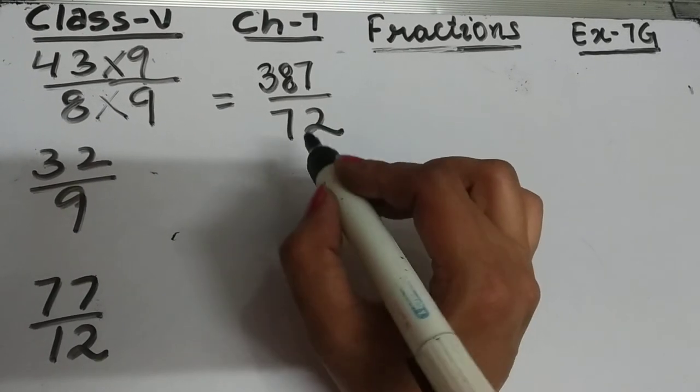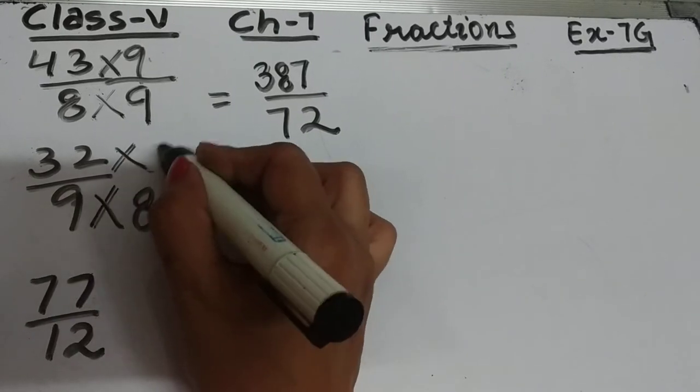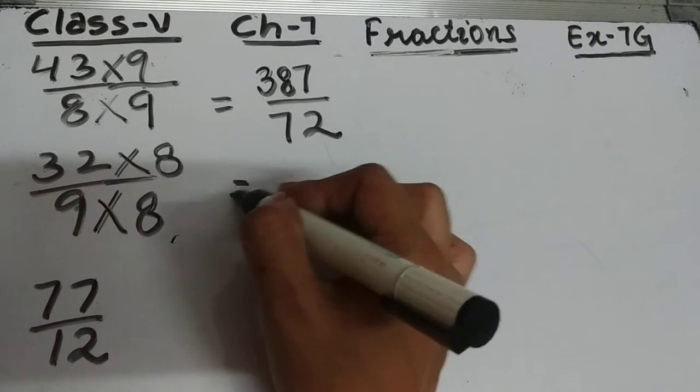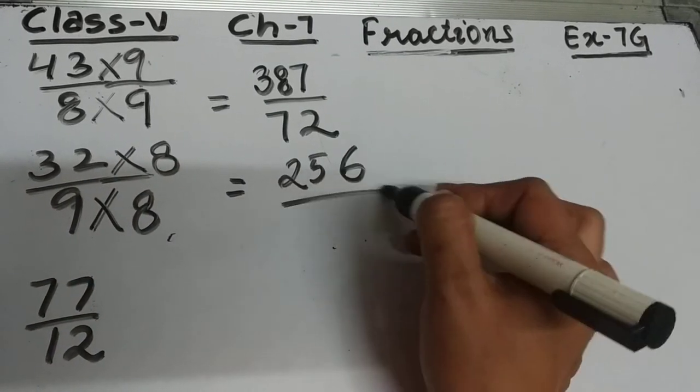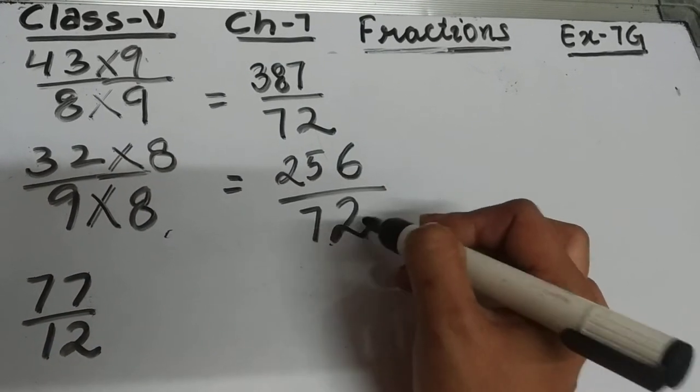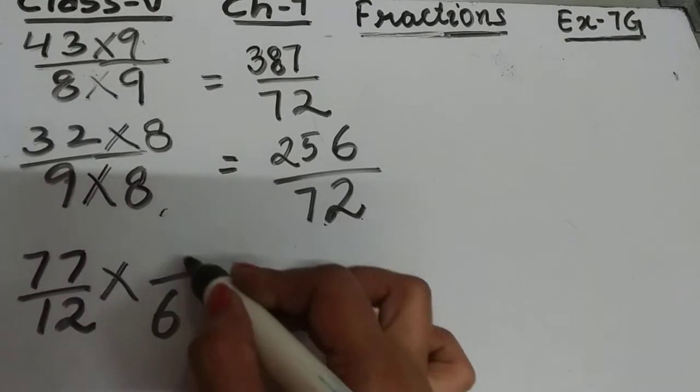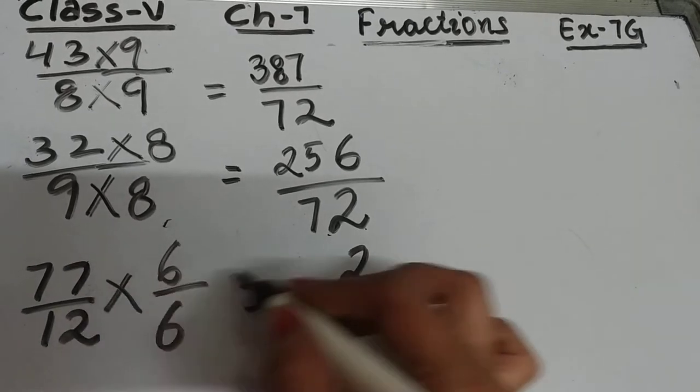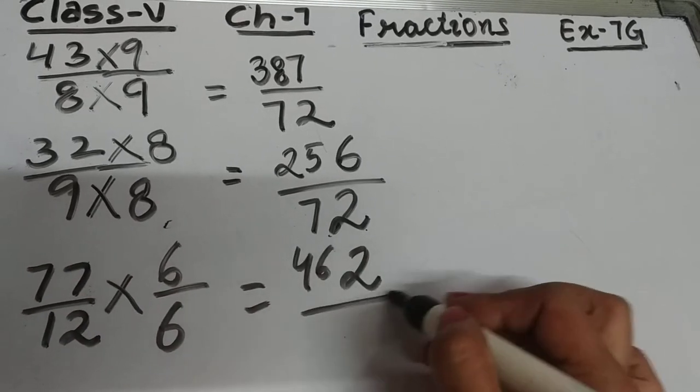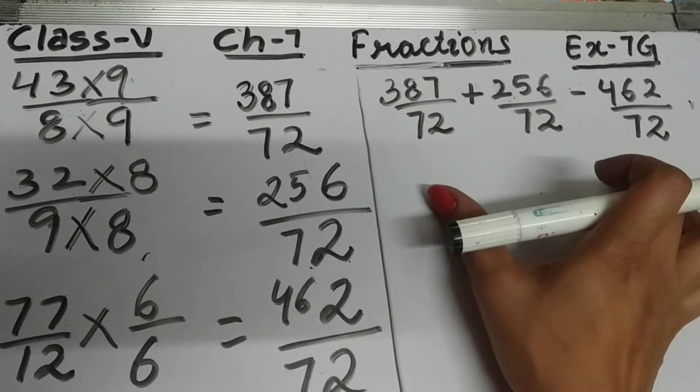Now 9×8=72, so multiply the numerator also by 8. 32×8=256, so this will be 256/72. Similarly, 12×6=72, so 77×6=462, giving 462/72. Now the denominators of all the fractions are 72.